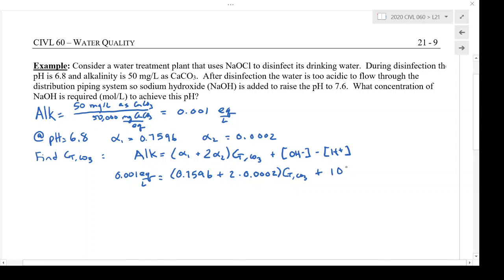So I solve that and I get a value for total carbonates of 0.00132 molar. If you prefer the 10x format, this is 10 to the minus 2.88. So that previous calculation was done at pH 6.8.